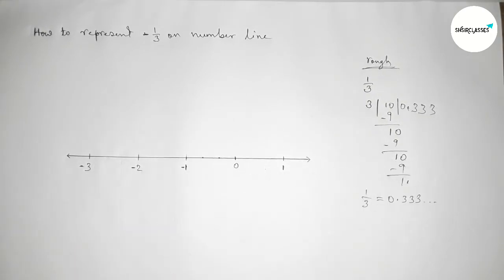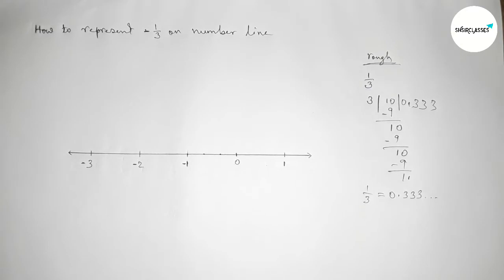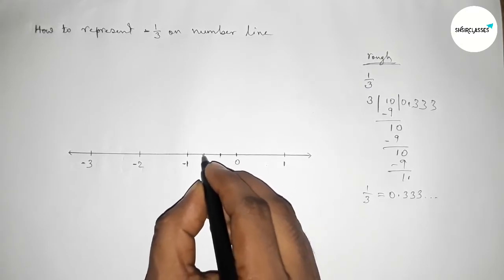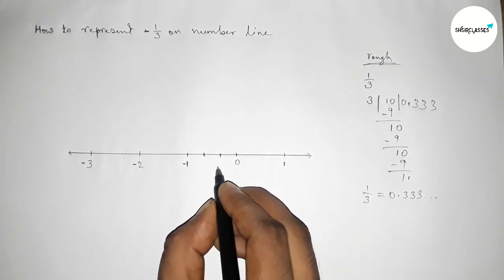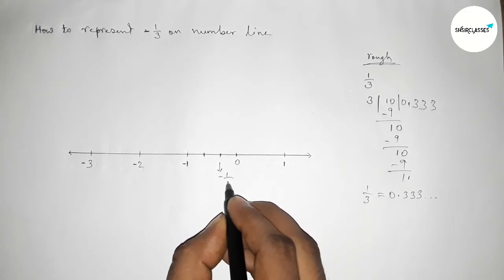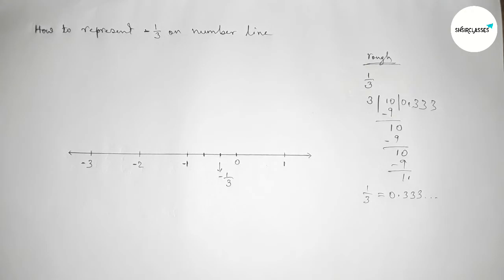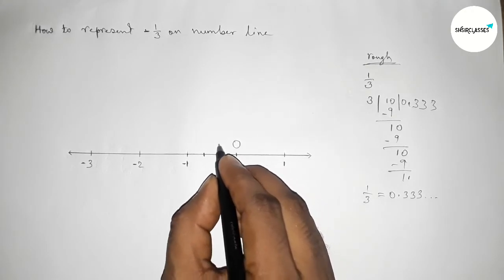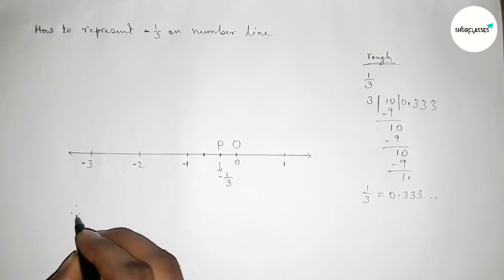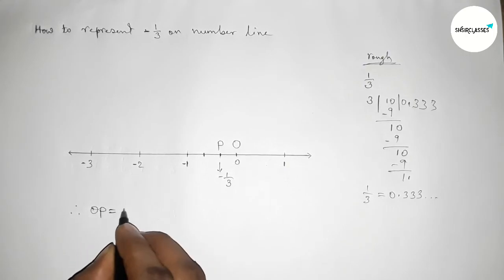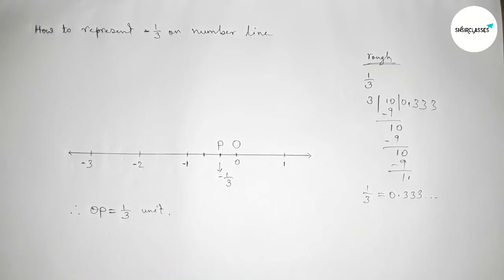Dividing the length between zero and minus one into three equal parts approximately. This is zero and this point is minus one by three on the number line. Taking point O and point P, therefore the length OP equals one by three unit. The value is positive since the length is always positive. That's all, thanks for watching.